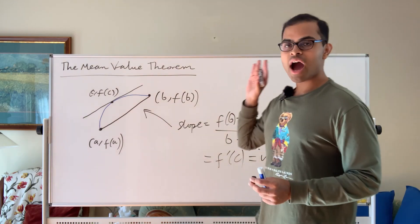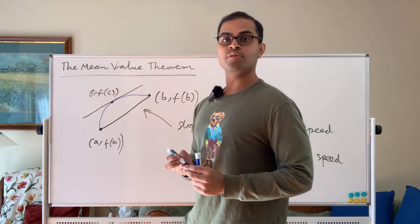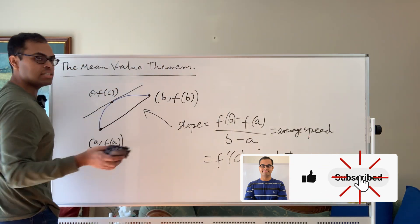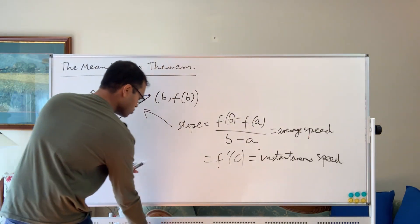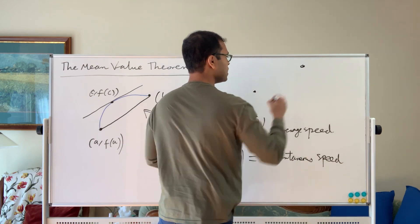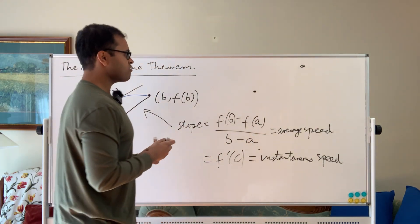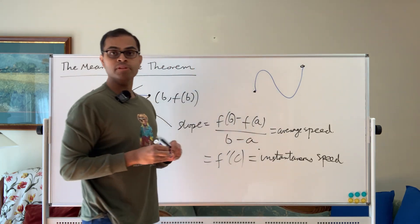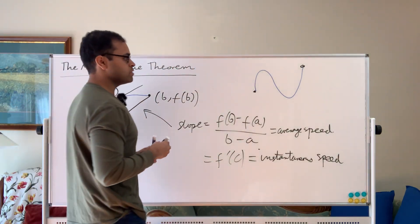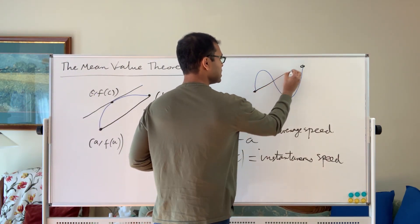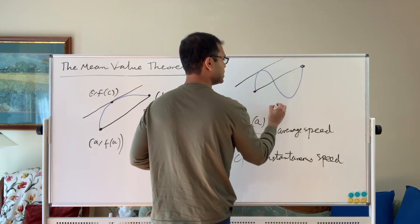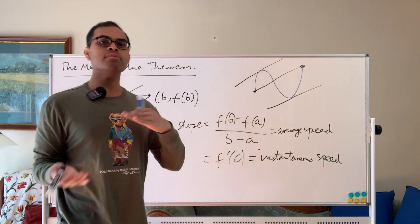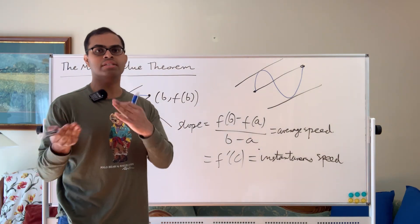So let's now dive into how we state this mathematically and also prove it. I'm also going to show you there could be multiple such c's. For example, you could draw a graph — even if it waves around, you could have multiple c's where the tangent line has the same slope as the secant line. So the mean value theorem is guaranteeing there's going to be at least one such point.